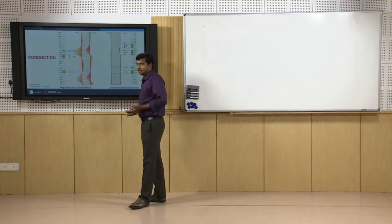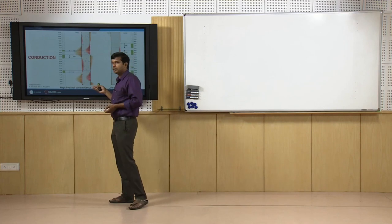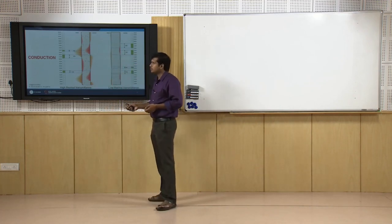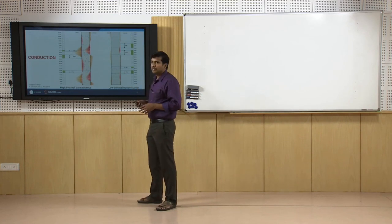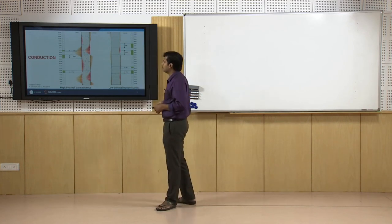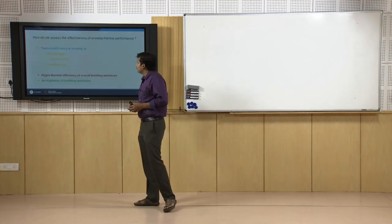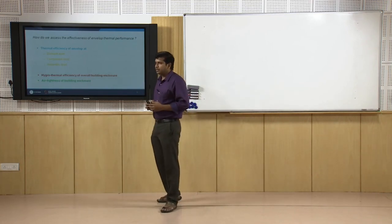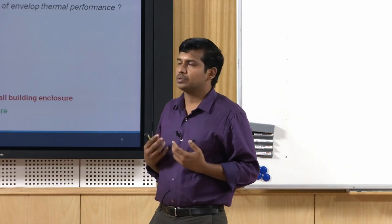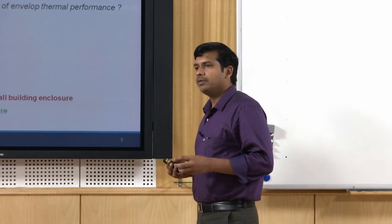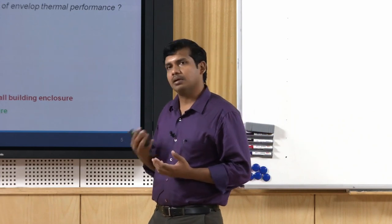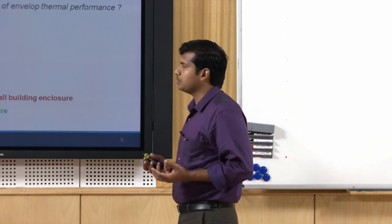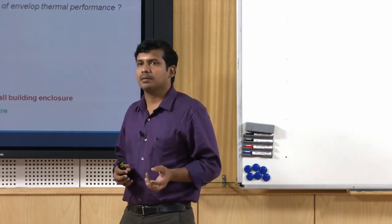This varies from one wall section to another based on orientation, material properties, and ambient as well as indoor conditions. We will look at these in more detail in the current module. How do we assess the effectiveness of thermal performance? As a designer we need to choose materials, choose wall systems, and ensure these materials or systems are performing well. The common way is to use certain indicators or numbers.